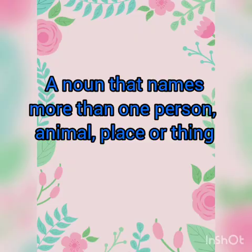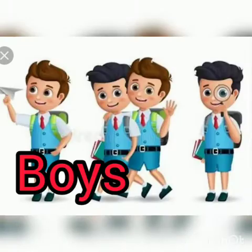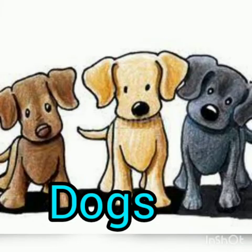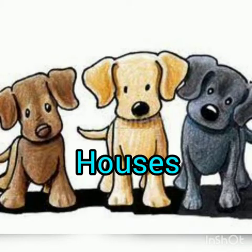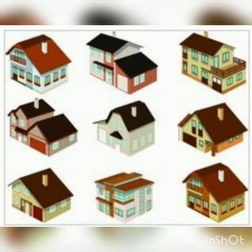A noun that names more than one person, animal, place or thing is called a plural noun. For example: boys, dogs, houses, and flowers.